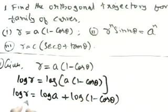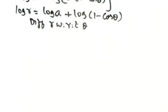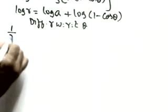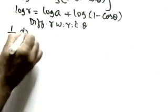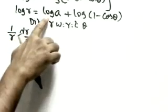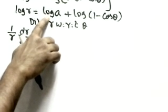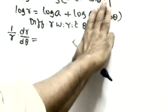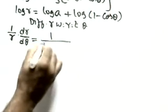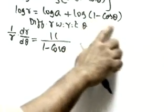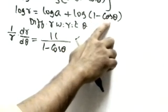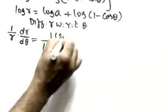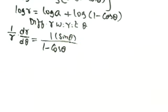Now differentiating with respect to theta: d/dθ of log r is (1/r)(dr/dθ). The log a term is constant, so its derivative is zero. For log(1 − cos θ), treating (1 − cos θ) as x, the derivative is 1/(1 − cos θ) times sin θ — since d/dθ of (−cos θ) is +sin θ. So we get (1/r)(dr/dθ) = sin θ/(1 − cos θ).